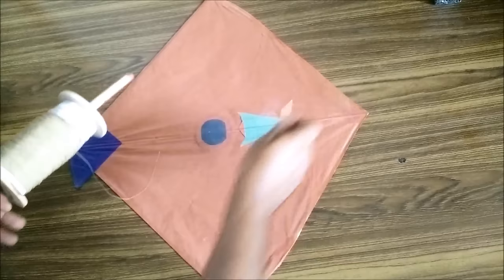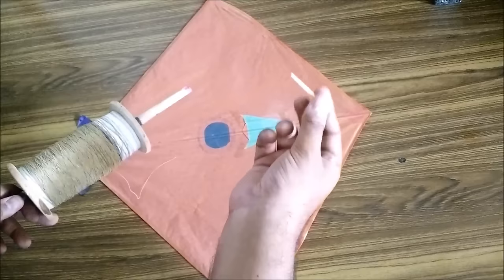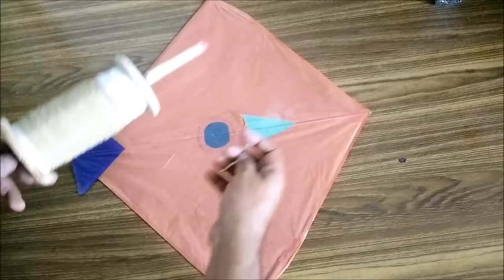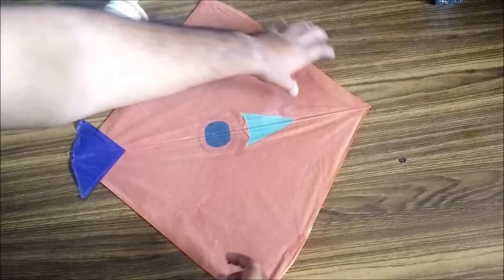So what we've got is a kite from the market. I have got one matchstick. You can use any other small stick available at home. This is basically to make holes in the kite. And I have got this kite flying thread.